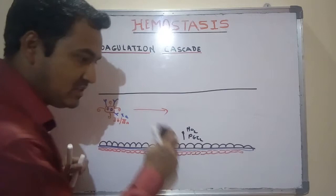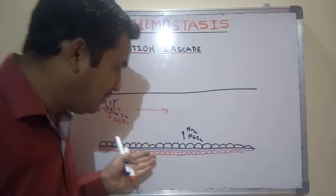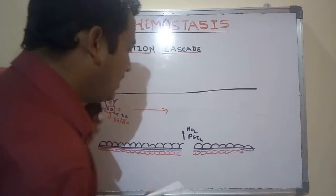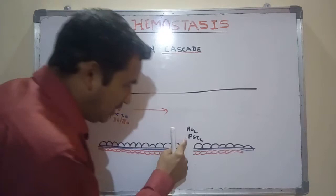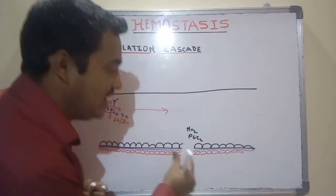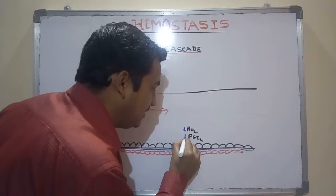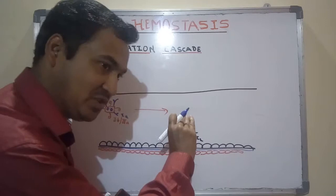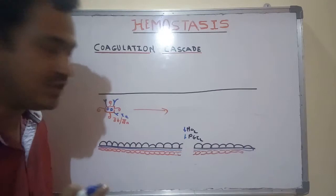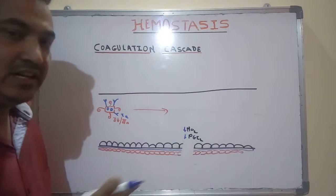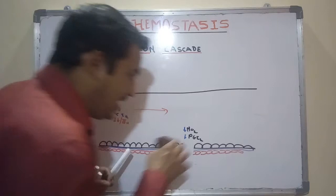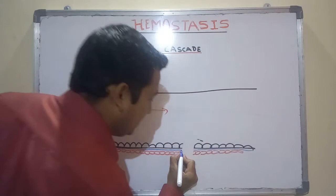Whenever healthy endothelial cells are present, they will never allow the platelet to stick and never allow blood to clot. But if the endothelial walls are injured — for example, due to a skin injury — the prostacyclin and NO2 produced by the healthy endothelium will be lacking in the injured part. Their function of vasodilation will not happen, so the vessel will vasoconstrict. And since NO2 and PGI2 are absent, platelets will start adhering — that is called platelet adhesion.